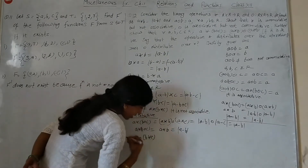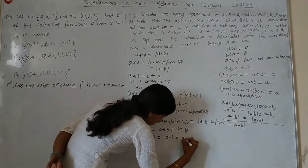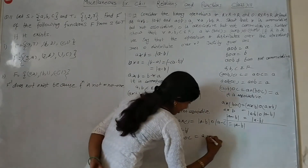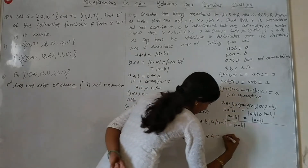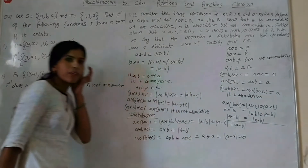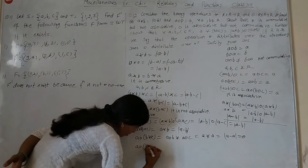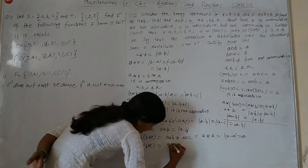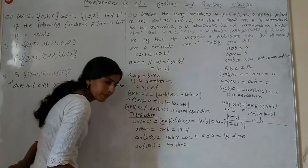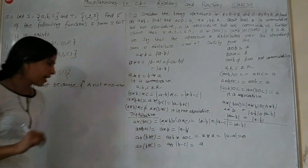Now check if O distributes over star. A O (B star C) — we can write this as (A O B) star (A O C). A O B means A, and A O C means A. So A minus A is 0. A O (B star C): B star C is B minus C, and A O (B minus C) is A. Both sides do not come out equal.